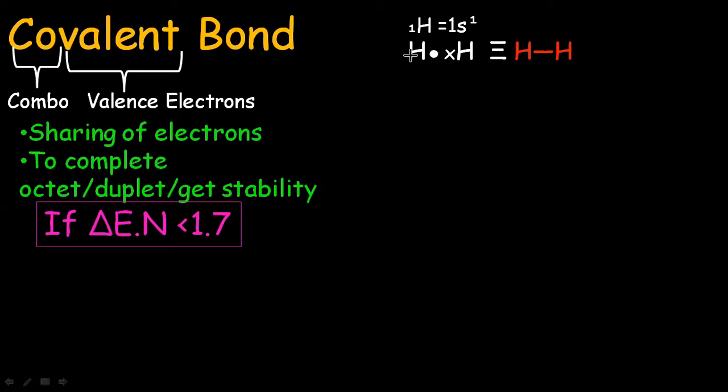Here it is. This dot is of this hydrogen and the cross is for this hydrogen. These are representing the electrons of both hydrogens. They are shared between two hydrogens. As one electron is shared between these two atoms,